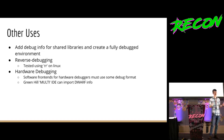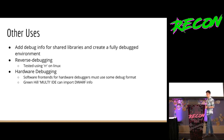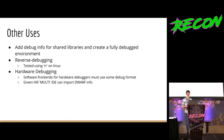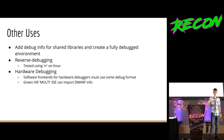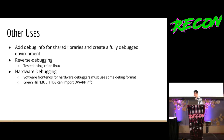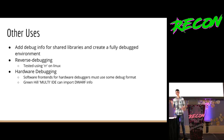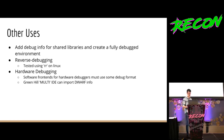Green Hills also makes a probe that uses JTAG and other protocols, and their IDE called MULTI works with their debugger and can import DWARF debug information according to their docs. I don't have a Green Hills license, so if anybody does and wants to test this, please let me know — because that would be really cool. You could pull firmware from something, do some reverse engineering, export DWARF debug info, pull it into MULTI, and then you have hardware debugging with source and line number mappings — very convenient.